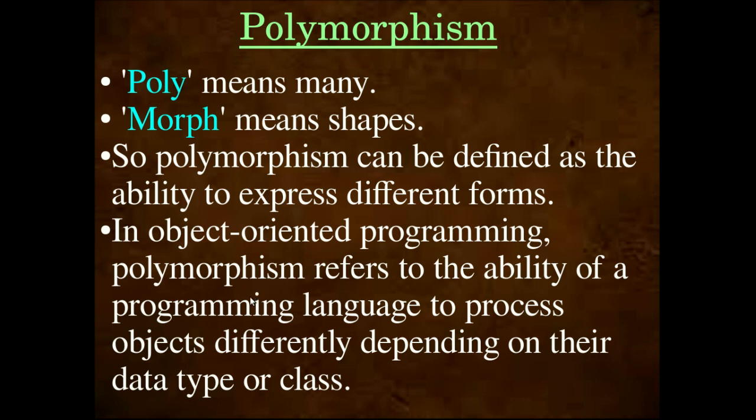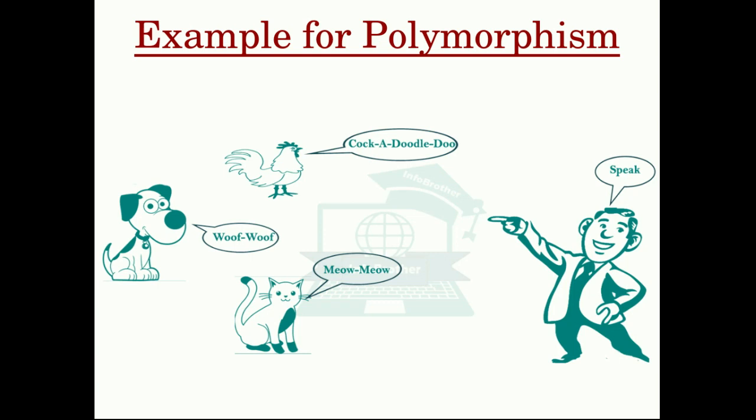Polymorphism is the ability of a programming language to process objects differently depending on their data type or class. Let's look at an example in our day-to-day life.